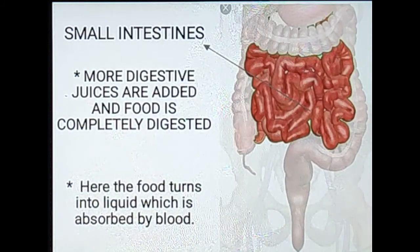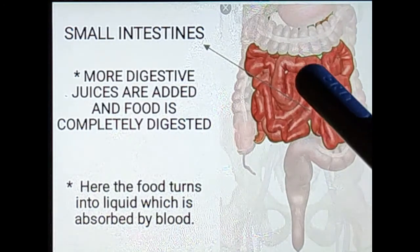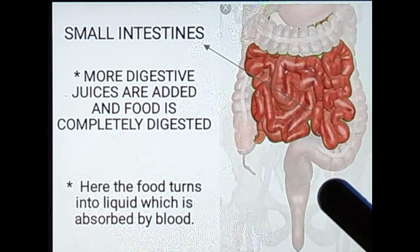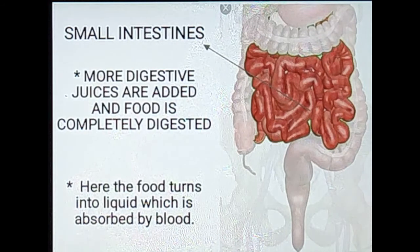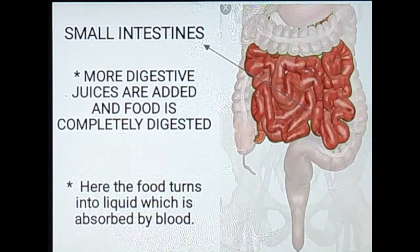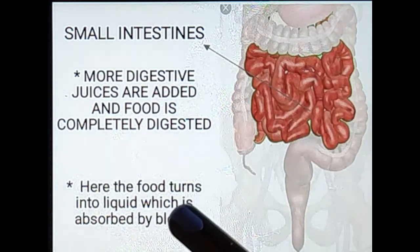The semi-digested food — meaning half-digested food — now reaches the small intestine, where it needs to be digested more. After the food is partially digested in the stomach, it enters the small intestine where more digestive juices are added. The food is completely digested in the small intestine. If a question asks in which organ food is completely digested, the answer is the small intestine. Here the food turns into a liquid which is absorbed by the blood.